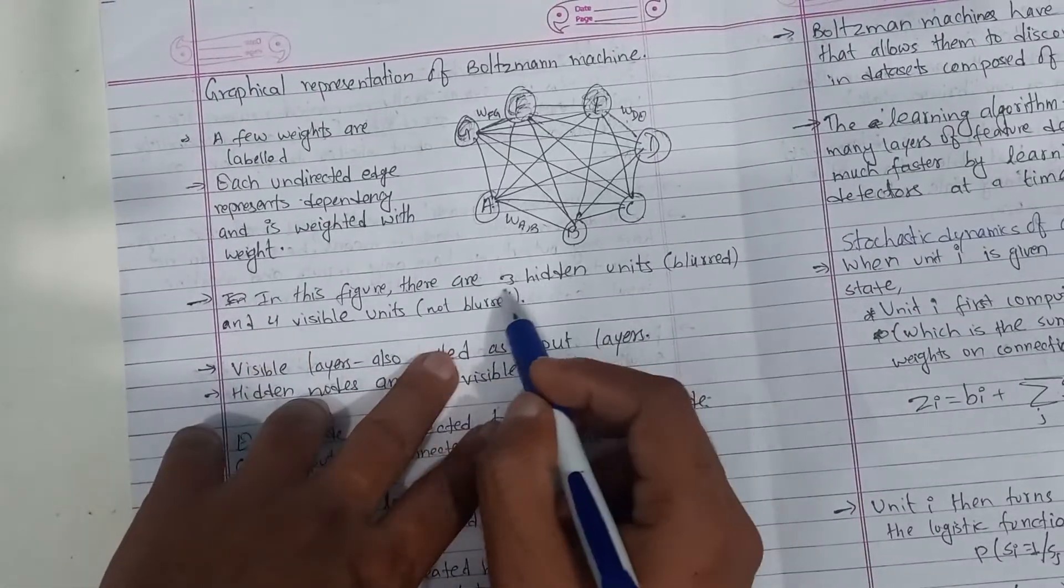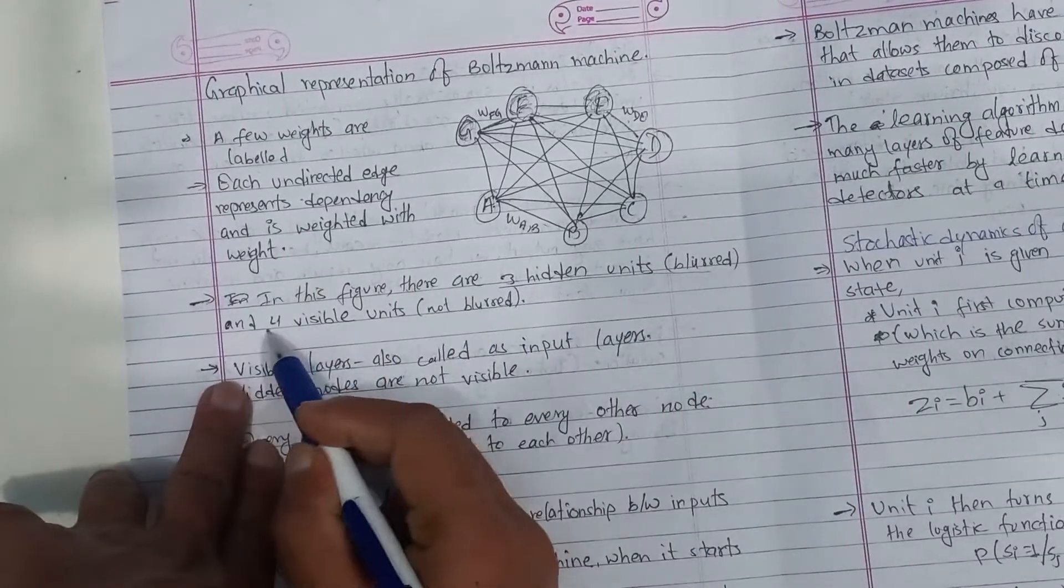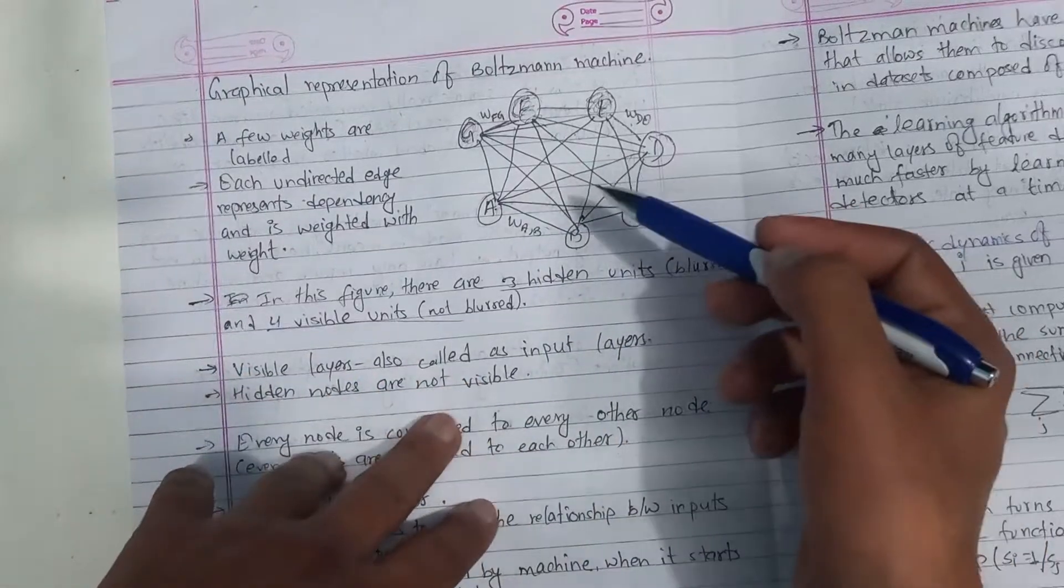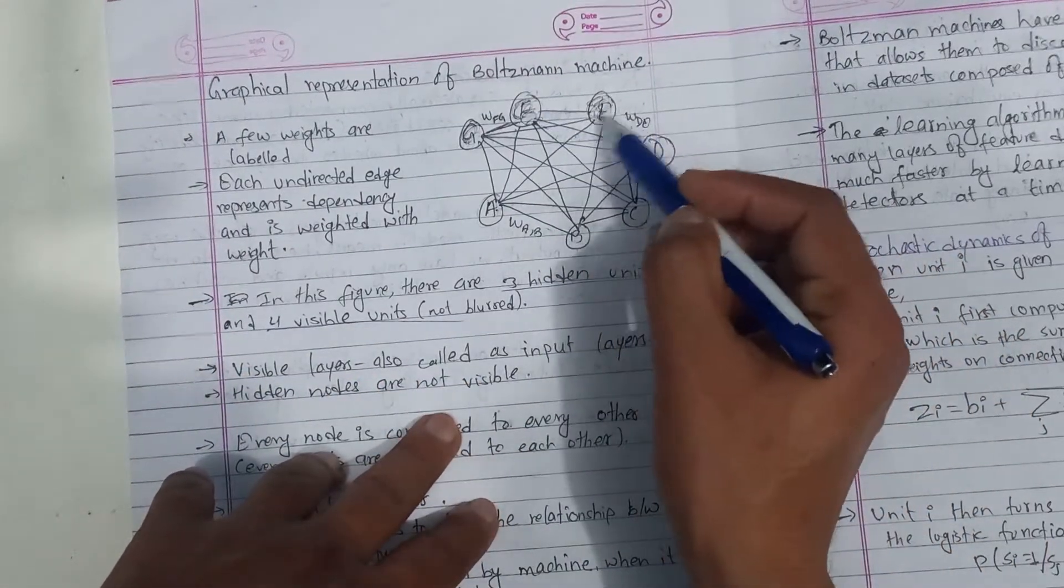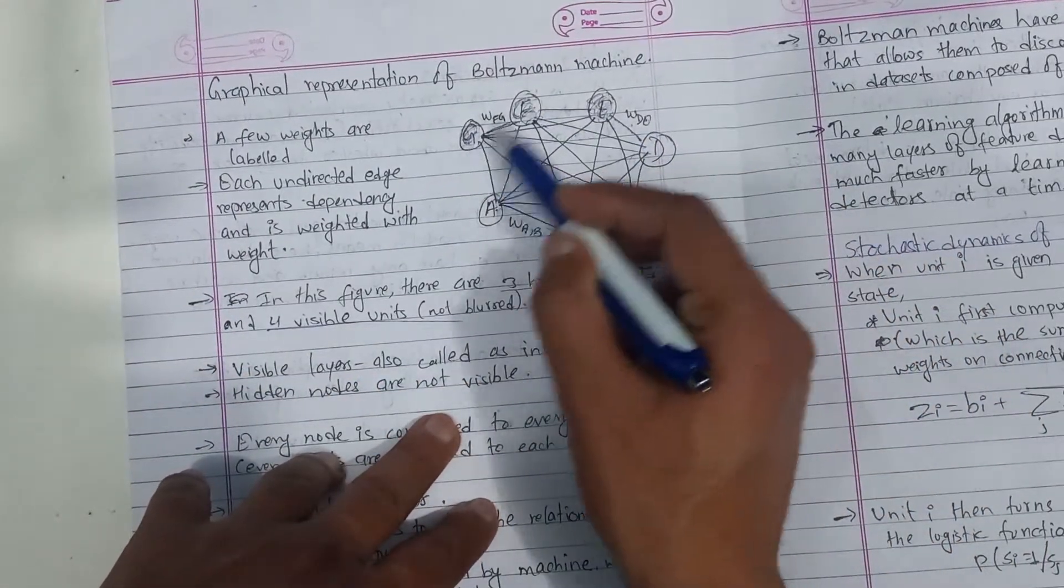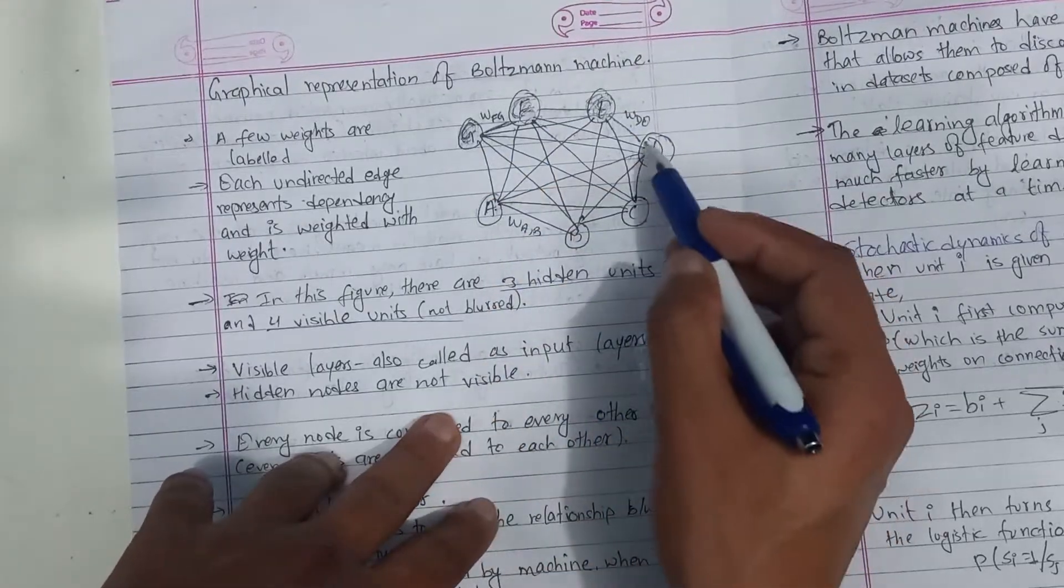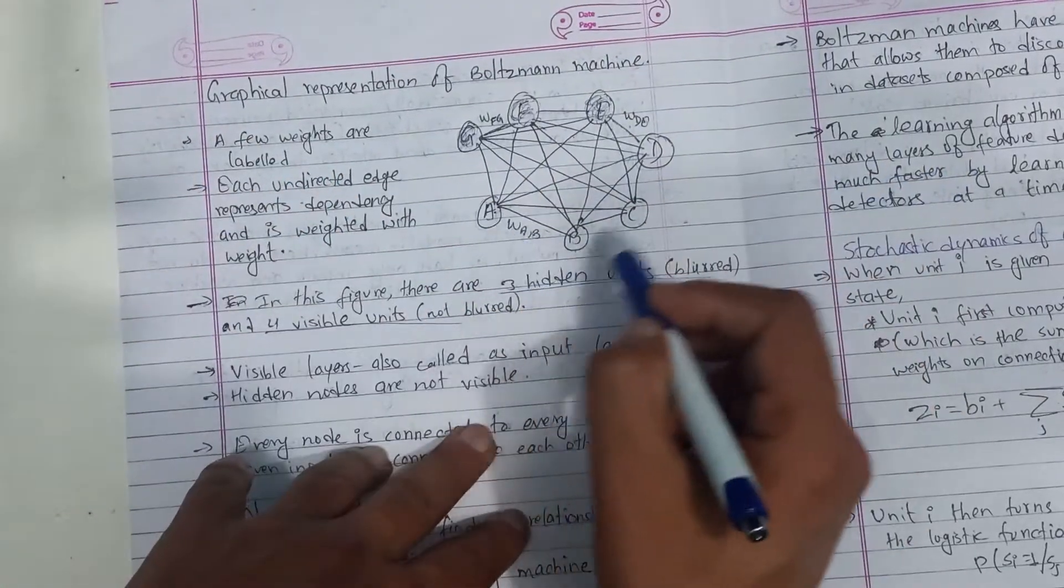In this figure, there are three hidden units and four visible units. If you look at this, this is a hidden layer. This is a, b, c, d.